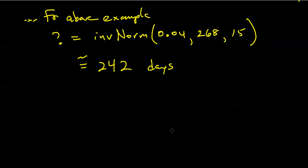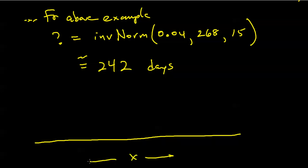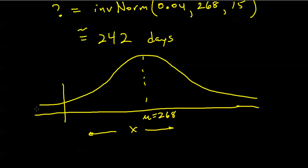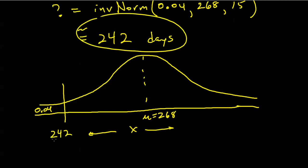So to find the cutoff for premature babies, it separates the bottom 4% from the top 96% in terms of length of pregnancy. From our calculation, that cutoff is 242 days — pregnancies shorter than 242 days would be classified as premature.